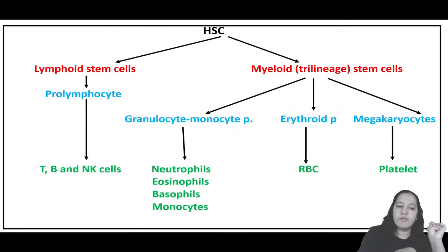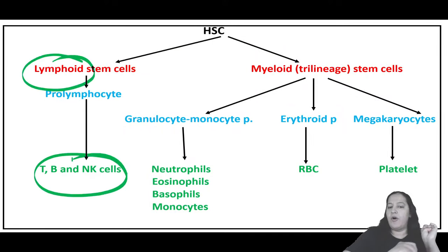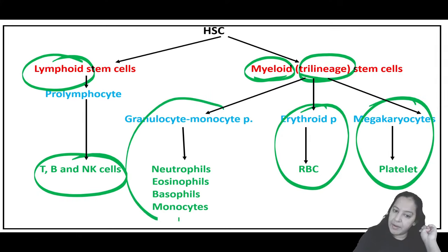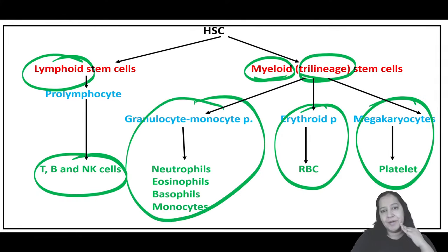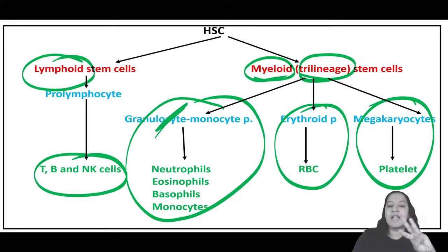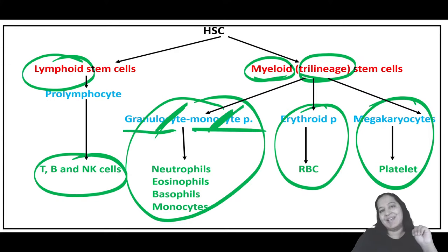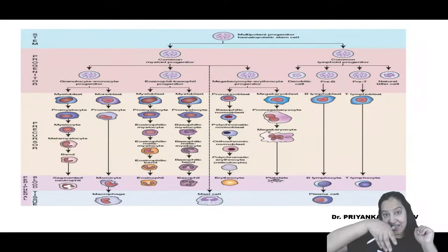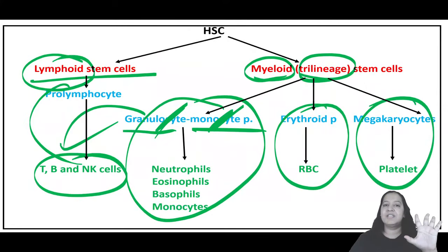From lymphoid series, lymphocytes are formed - T and B. From myeloid series, which is the trilineage series, RBCs are formed, platelets are formed, and the remaining WBCs. The remaining WBCs are four: three granulocytes - eosinophil, basophil, and neutrophil - and one agranulocyte - monocyte. So this is known as the granulocyte-monocyte series. Lymphocytes come from a separate series. These are the intermediates - stem cells don't directly form the final cells, so you should learn the intermediates in between for understanding leukemias and lymphomas.